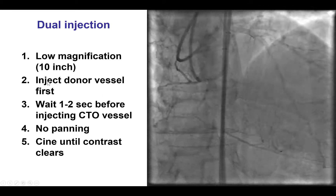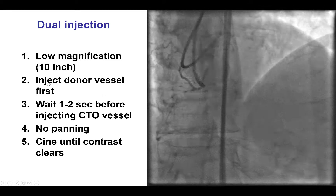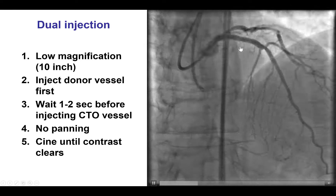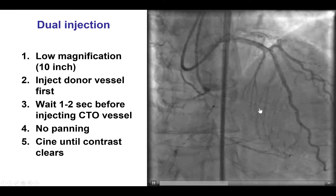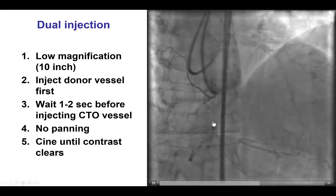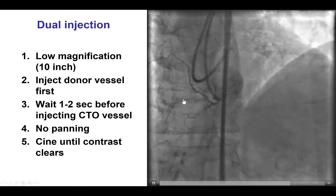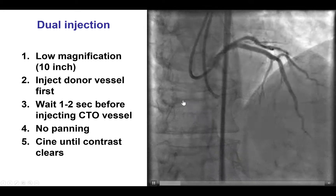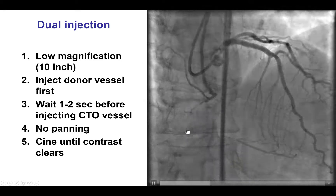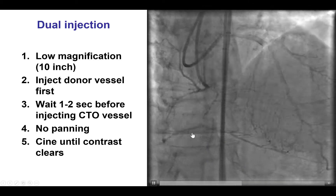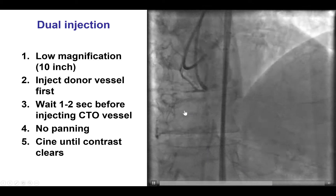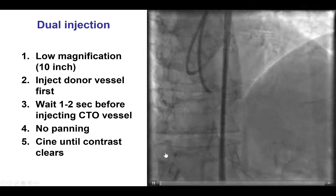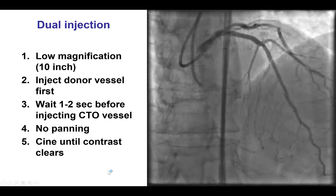The donor vessel — in this case the left main — is injected first. A few seconds go by and then the CTO vessel is injected until the contrast clears, so we can understand the proximal cap, distal cap, and occlusion length.